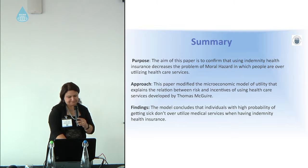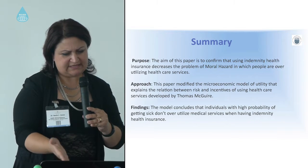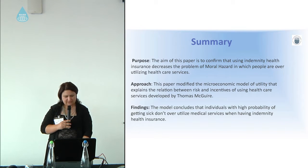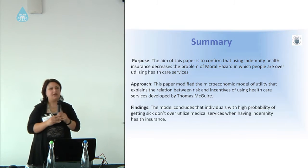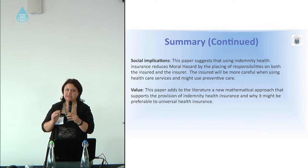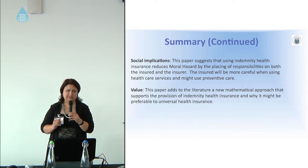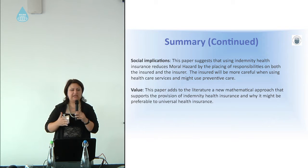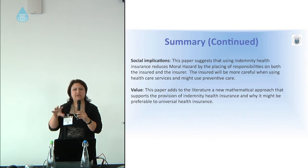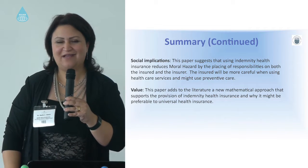This is a summary of the paper, which can be found in the book. The value of this paper is that moving toward universal health insurance might increase medical care costs associated with these plans. We suggest using indemnity health insurance and providing other solutions for the poor, while at the same time controlling medical care costs.